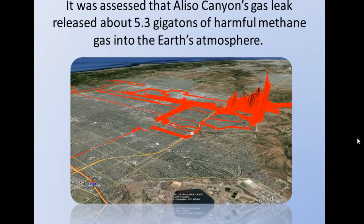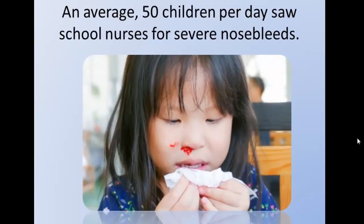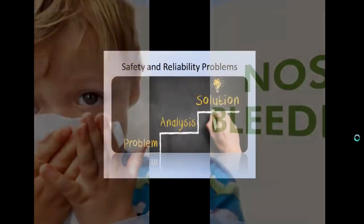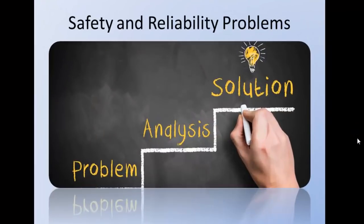The power utility in Southern California implemented contingency plans in anticipation of natural gas shortages for powering local gas-based electric plants. Meanwhile, local residents reported headaches, nausea, and nosebleeds — an average of 50 children per day saw school nurses for nosebleeds. As these few samples attest, the centralized grid poses an increasingly unbearable impact to the environment and to the health and safety of the people it is supposed to serve.